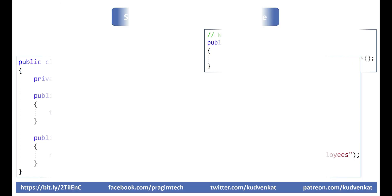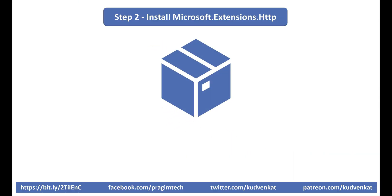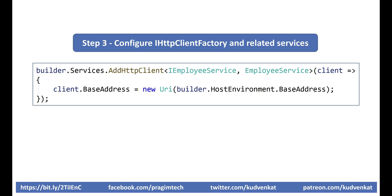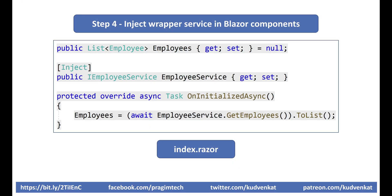Let's quickly recap the steps. Step 1: Implement the wrapper service, which uses the built-in HttpClient class to call the REST API to send and receive server-side data. Step 2: Install the NuGet package microsoft.extensions.http, which contains the AddHttpClient extension method. Step 3: Use the AddHttpClient extension method to add HttpClientFactory and related services to the dependency injection container, configured in the main method in Program.cs. Step 4: Inject the wrapper service into any Blazor component using the inject attribute and use it to send and receive server data. That's it in this video. Thank you for listening.